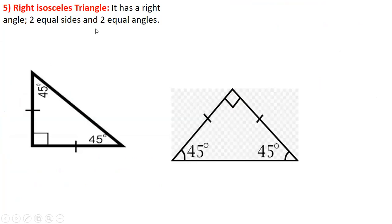The final triangle is the right isosceles triangle — it combines both properties. It has one angle of 90 degrees, and it is isosceles, so it has two equal sides and two equal angles. The two equal sides are issued from the special vertex where the right angle is, and the side opposite to it is the hypotenuse. Since 180 minus 90 leaves 90, and the remaining two angles are equal, each of the other two angles measures 45 degrees.